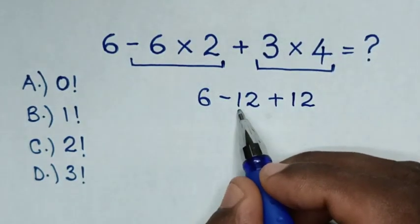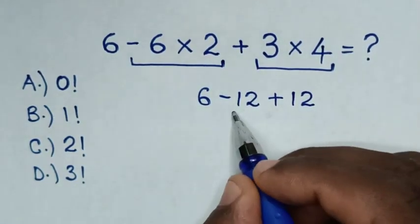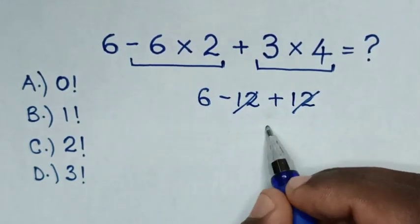Then negative 12 plus positive 12 is 0, so they will cancel each other. Then here it will be 6.